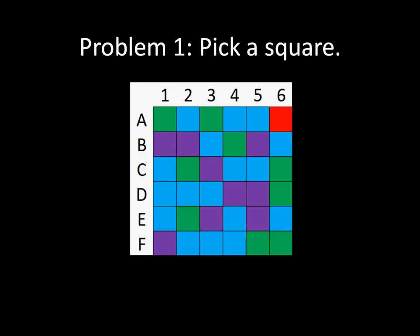For problem one, I told you to pick a square. There are thirty-six pure strategy Nash Equilibria in this game, one for every individual square. However, my answer was A6. And why is that? Well, all of these squares are either blue, purple, or green, except for one — there's only one that's red: A6. So it kind of stands out, and maybe you want to select that one because it seems like an obvious choice just because it is red and everything else isn't. That's why I selected A6.